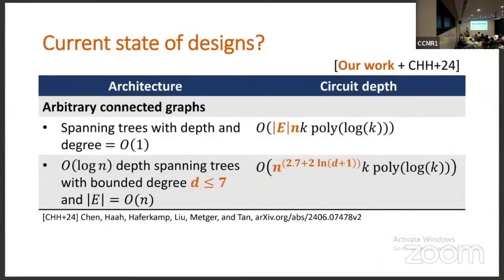It's not that our work is completely useless now. There are still simple classes of graphs where our results combined with some of the recent results are the state of the art. Take some connected graph, look at its spanning tree, and see if its degree is constant. Then our results combined with this result tells you the best bound that we know so far on the circuit depth to form designs. And for some common sense spanning tree graphs which are not too deep and have some constant bounded degree, our results combined with the new results are state of the art for those kind of things.